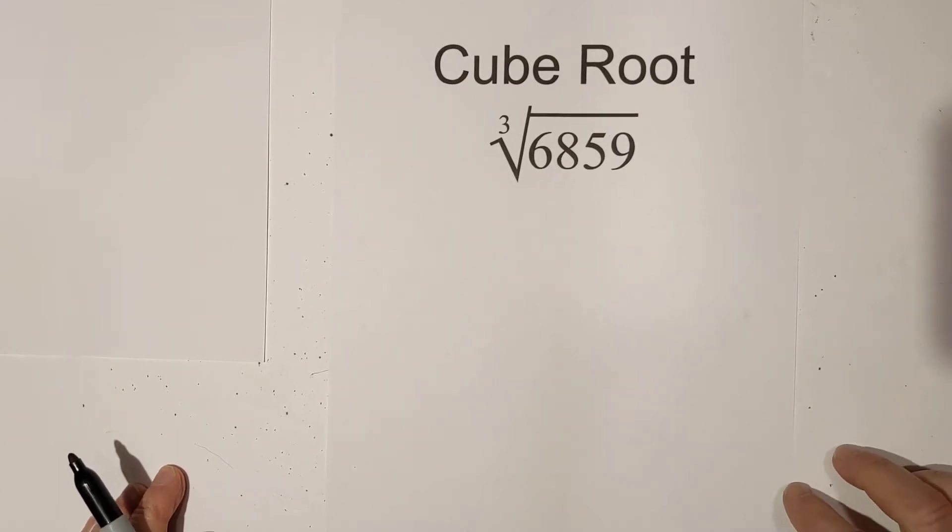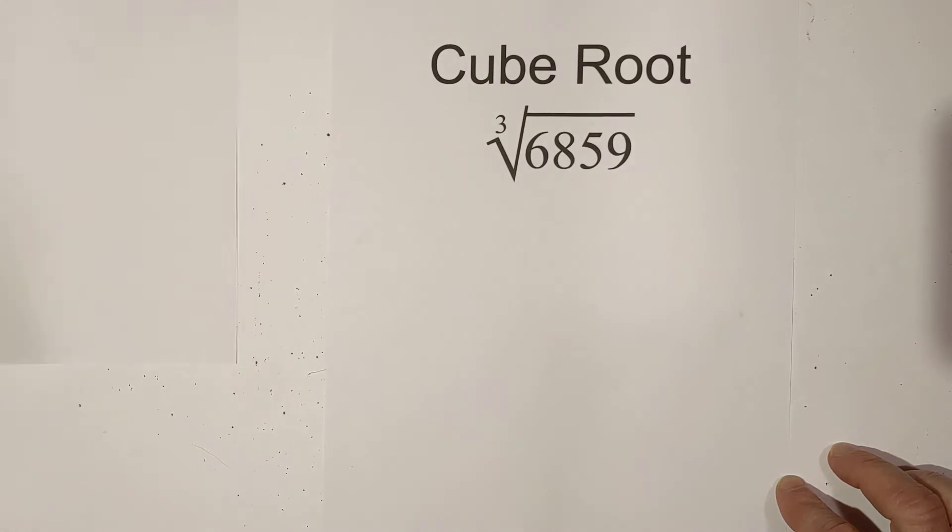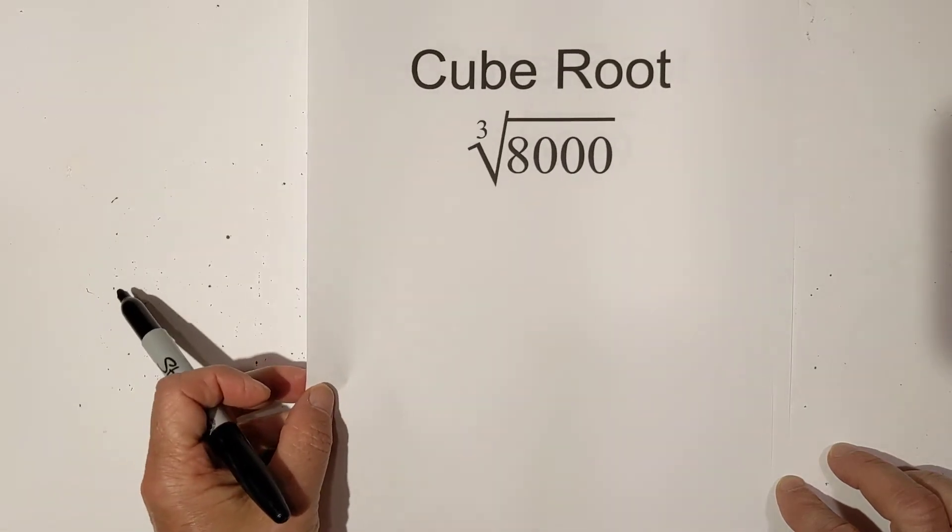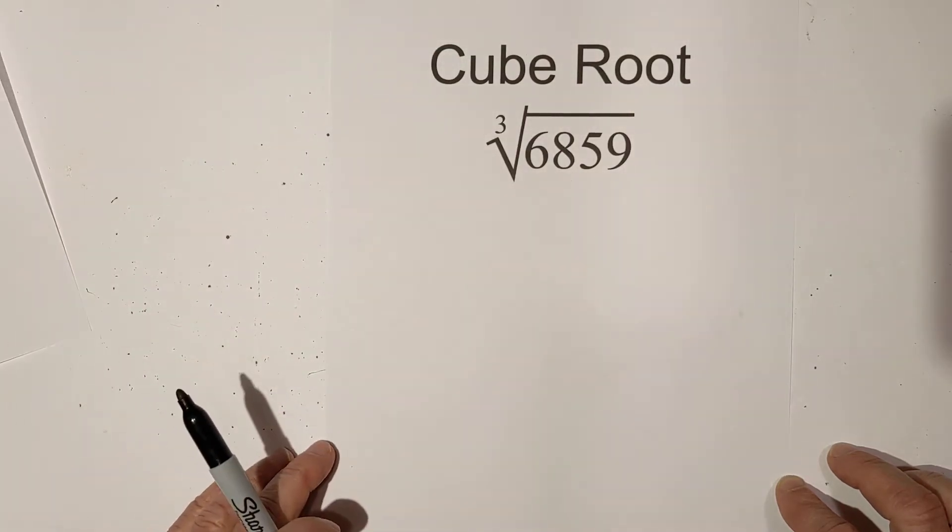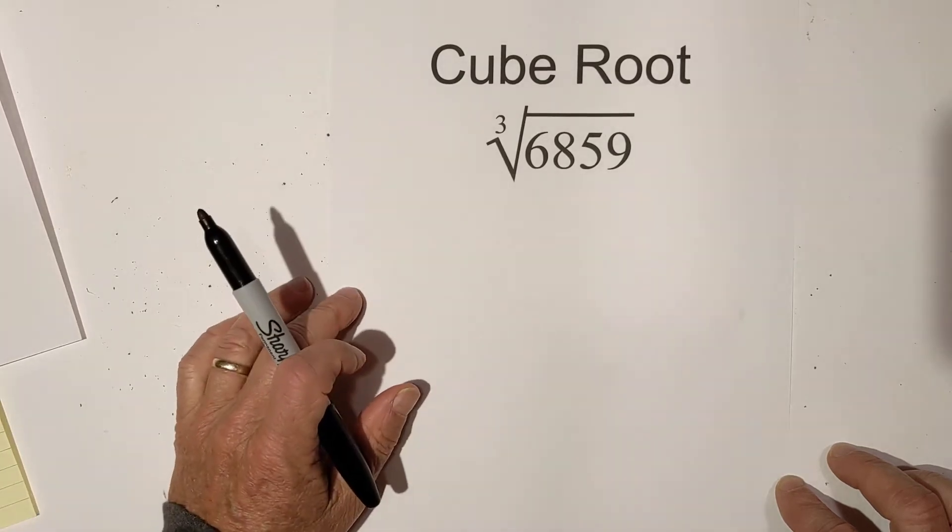Welcome to Moo Moo Math and Science. In this video let's figure out how to find the cube root of 6,859 and the cube root of 8,000 using a factor tree. You can find these without a calculator and may come in handy sometimes.